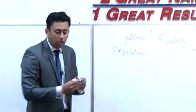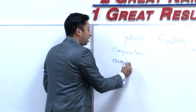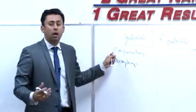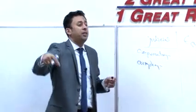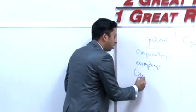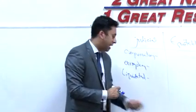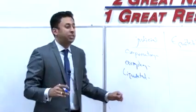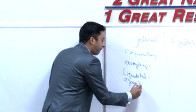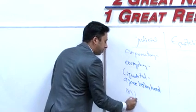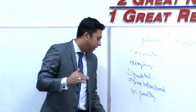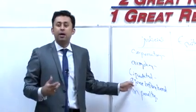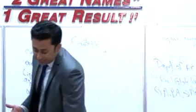Liquidated damages are where we agree beforehand on the penalty. This is critically important for real estate. Liquidated damages are where the parties agree beforehand on what the remedy will be in the event of default. For example, if we agreed yesterday that I would pay you $20 if I didn't show up to class today, and I don't show up, I owe you exactly $20 — no matter what your other costs are.